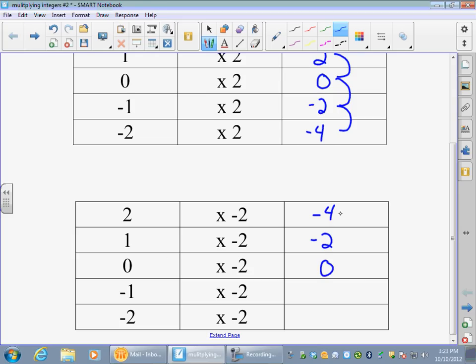And now we can see that these ones are actually going up by two. And so they should probably continue to go up by two, which would give us a positive two. And then up by two again gives us a positive four.